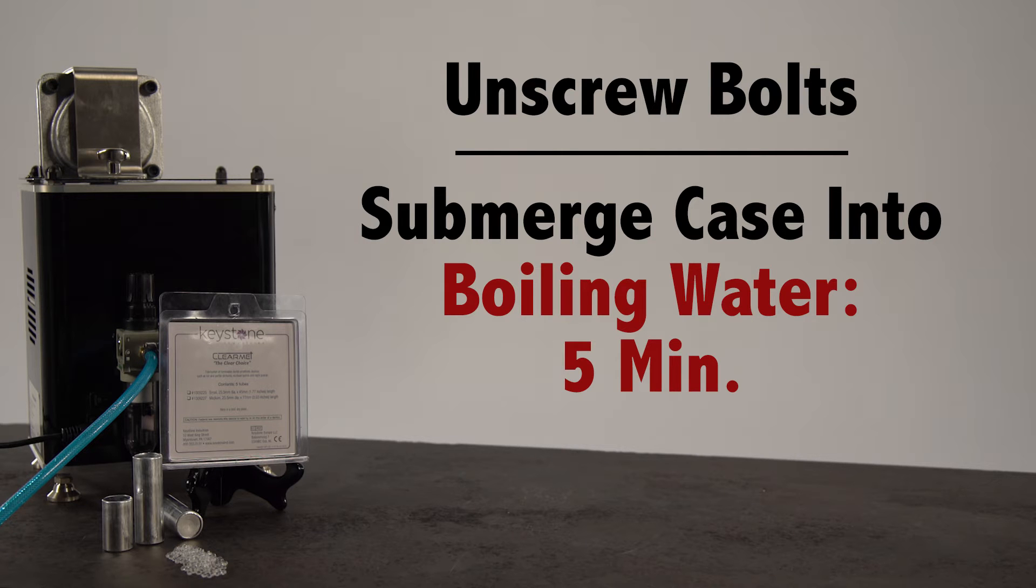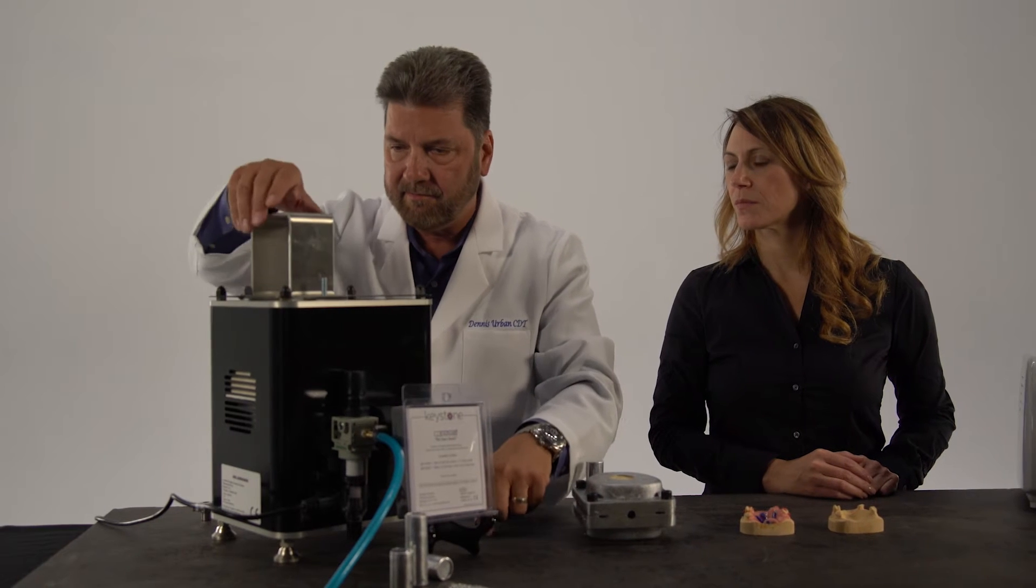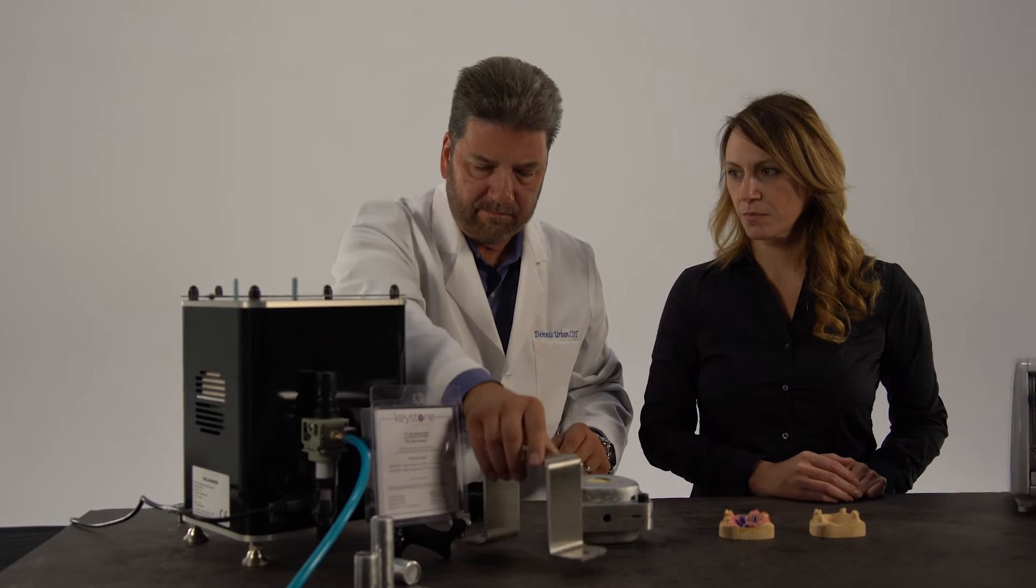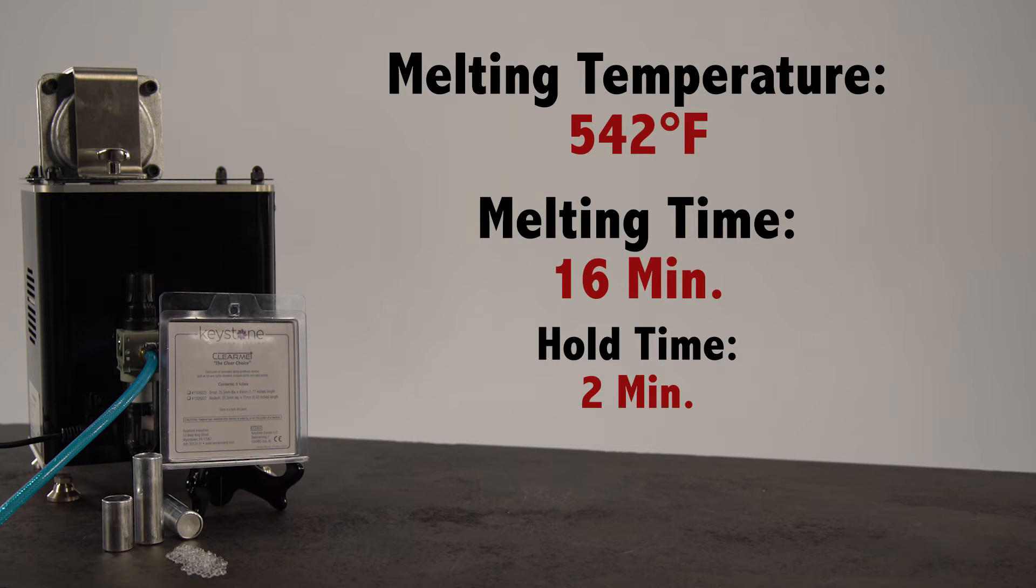Unscrew the bolts and immerse into boiling water for five minutes. At this point, you may turn on the FlexPress digital injection system. Program the injection system with a recommended melting temperature of 542 degrees Fahrenheit. Melt time is 16 minutes with a hold time of 2 minutes.